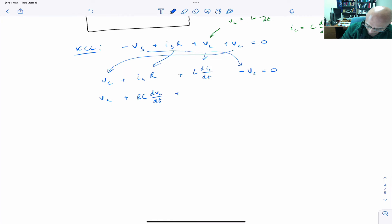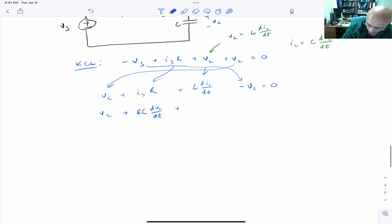And then DI DT, well, that's the derivative of IS. So we'll write this again. So the derivative of the source current is the second derivative of the capacitor voltage with respect to time multiplied by C. So now we'll write this as LC.